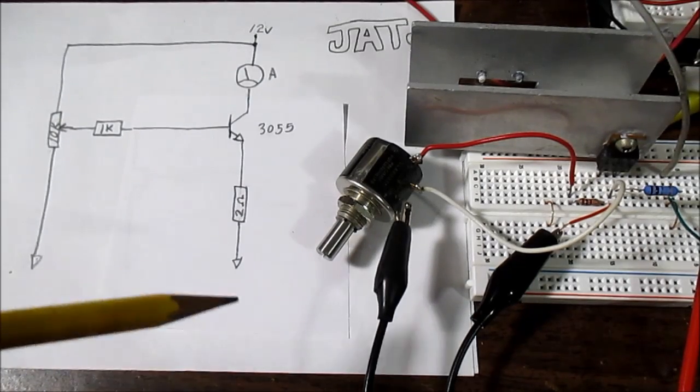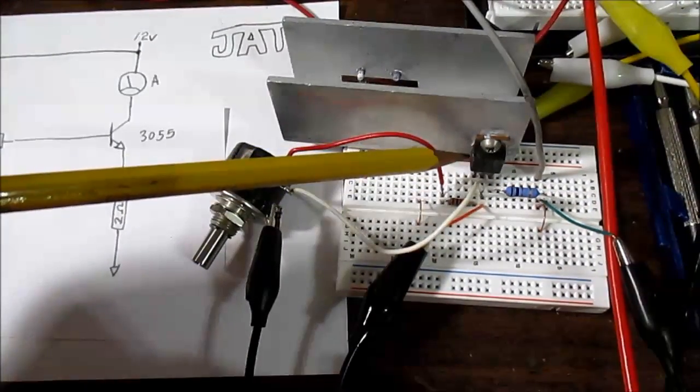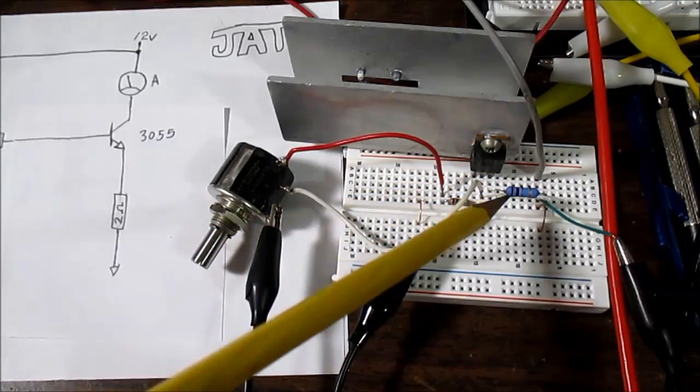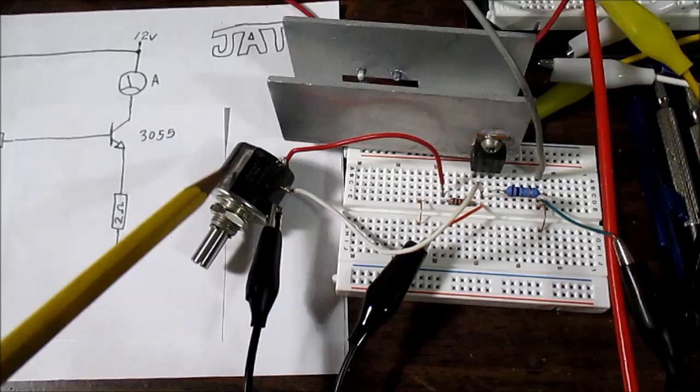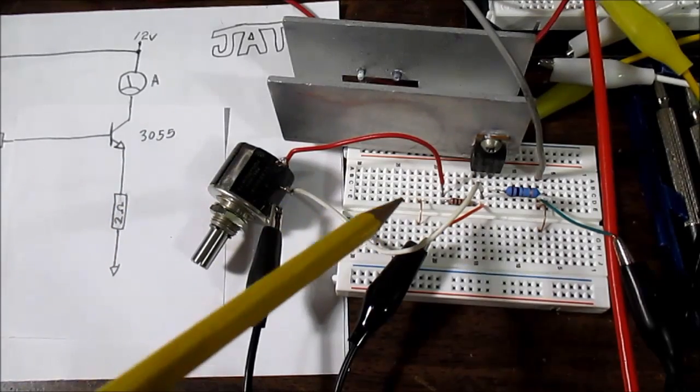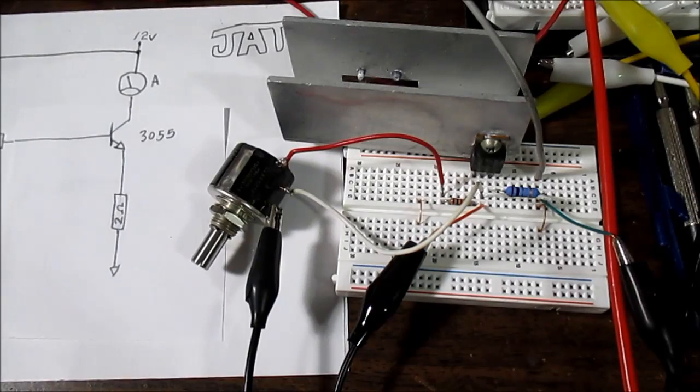Okay here I have it set up. I have the transistor on the heat sink. There's the 2 ohm emitter resistor and of course the potentiometer and that 1k resistor right there. And let me bring in the meter.